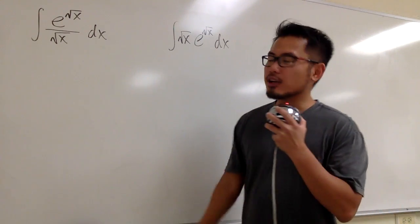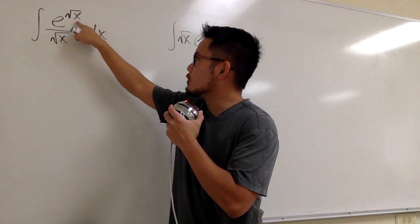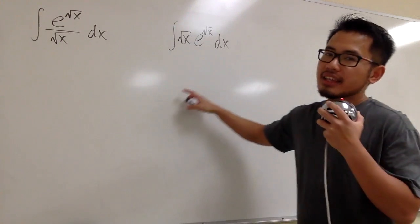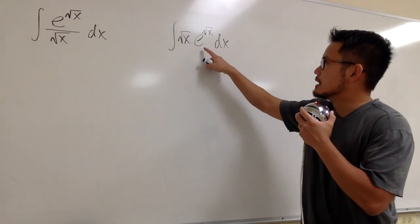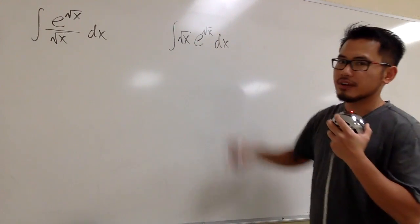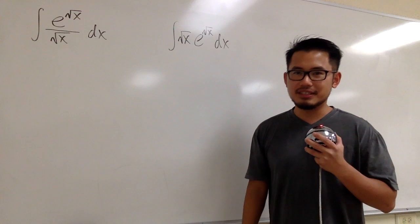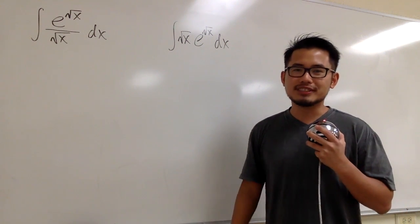We have another integral battle. The first one is the integral of e to the square root of x over square root of x, and the second one is the integral of square root of x times e to the square root of x. Which of these do you think is easier? Do the easier one first.